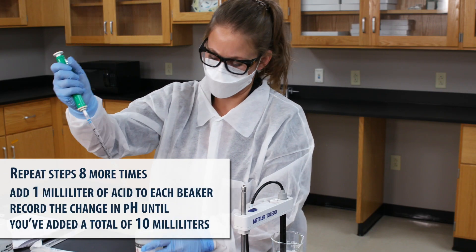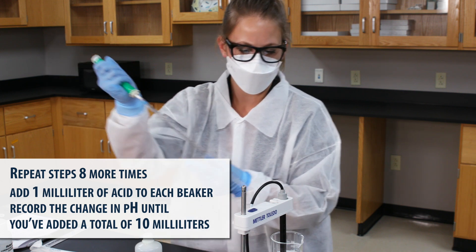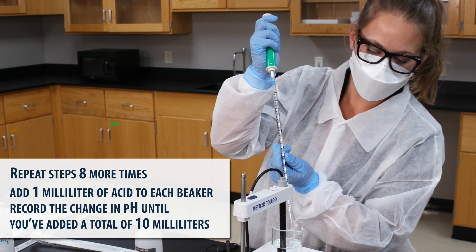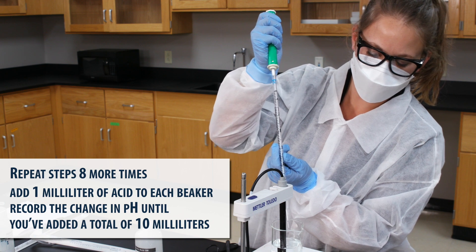Repeat these steps eight more times. Add one milliliter of acid to each beaker and record the change in pH until you've added a total of 10 milliliters.